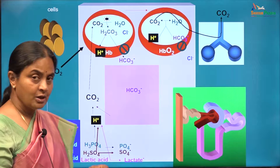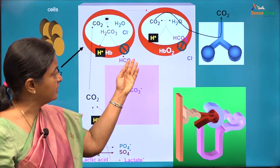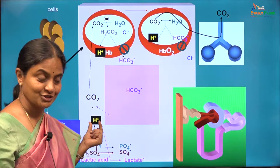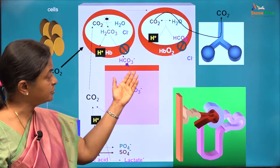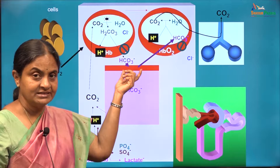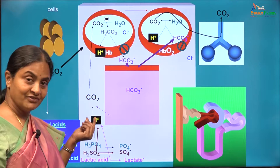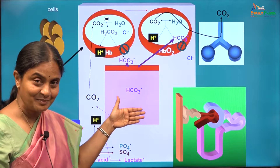If I pose this question to a fresher batch — what is the source of bicarbonate for buffering the fixed acid protons — a common answer would be that bicarbonate is formed by erythrocytes and can be used for buffering of fixed acid protons. That is not a correct answer because the bicarbonate formed by erythrocytes is reclaimed by erythrocytes in the pulmonary circulation to eliminate the carbon dioxide. That bicarbonate is not available for buffering the fixed acid protons. The bicarbonate available for buffering fixed acid protons comes from the kidneys.